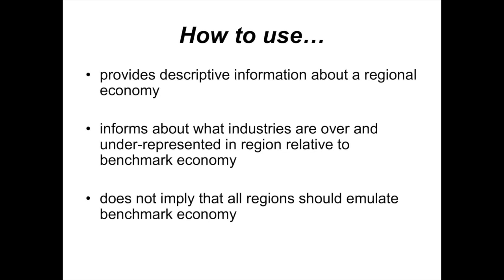When interpreting location quotients: a value exceeding one tells us the region specializes in the industry; a value less than one tells us the industry is underrepresented; and a value equal to one tells us the industry shares are similar between the region and the benchmark. Location quotients provide really useful descriptive information about a region's economy — in fact, almost every regional economic profile includes them. They inform us about industries that are over- and underrepresented relative to the benchmark, which is important for describing regional specialization and identifying gaps in the local economy.